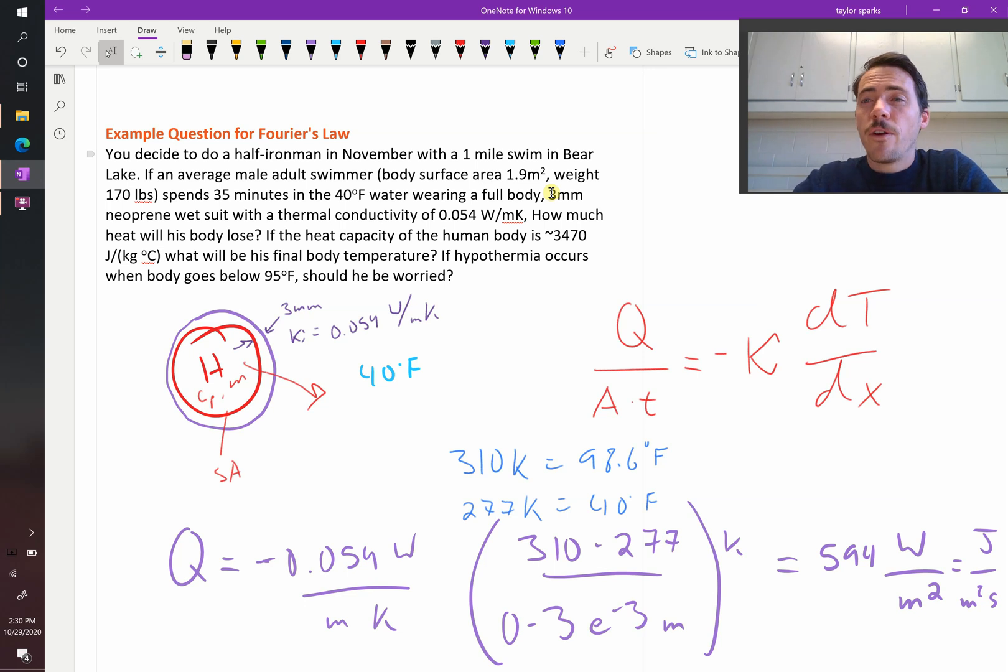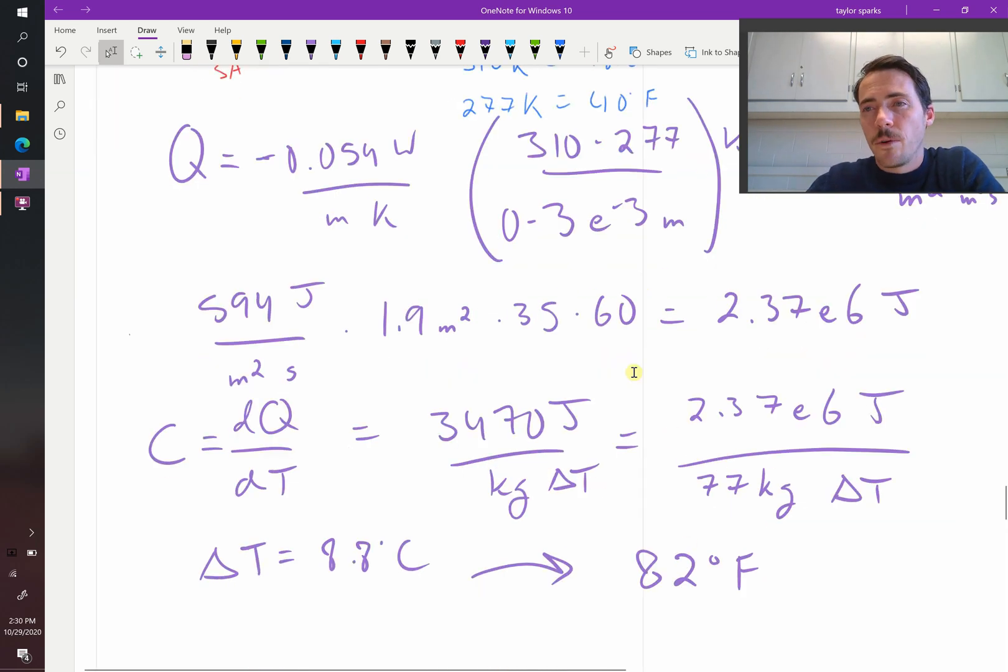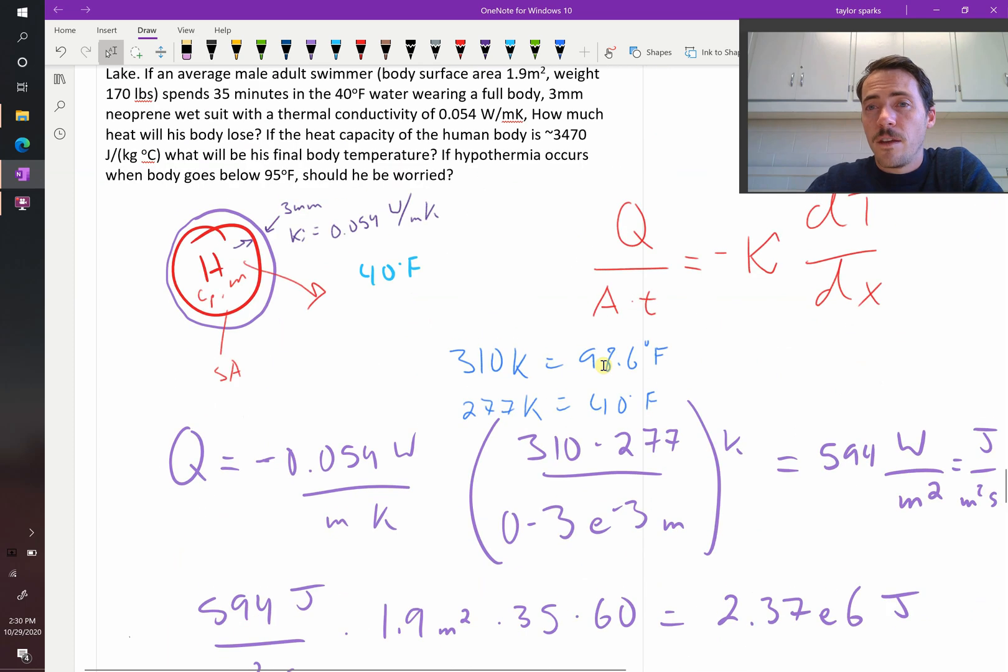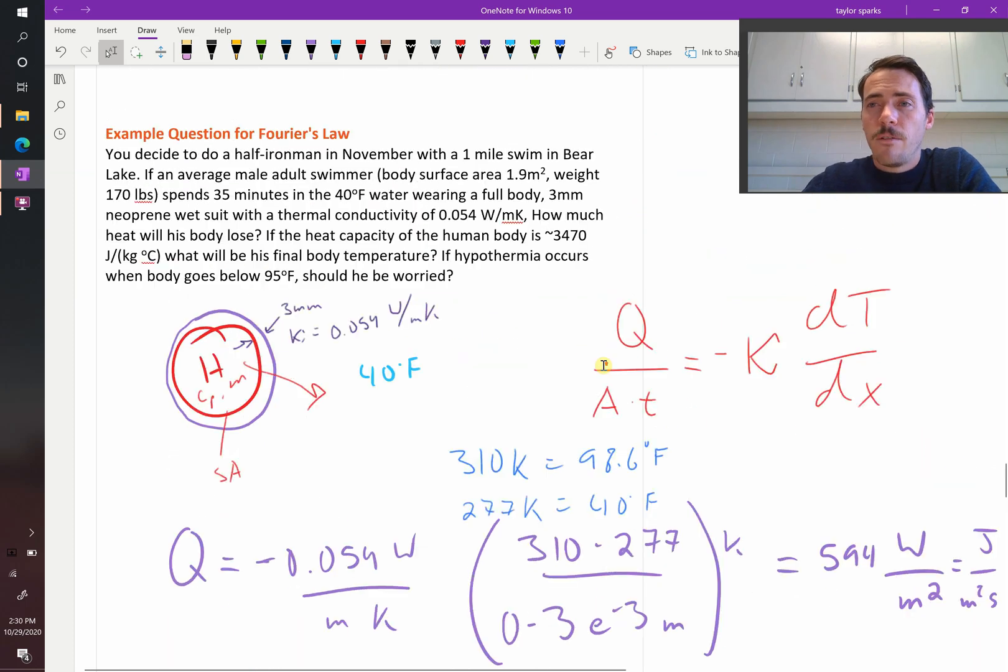But we're not accounting for their metabolic heat generation. People are like little tiny motors. We generate heat by eating food. We then break that food down at a molecular level, and we turn it into heat. So we didn't include that in this calculation. And that's why people don't actually get hypothermia when they're swimming, is they warm themselves up. They have some molecular generation of heat, and that's why people don't get hypothermia.